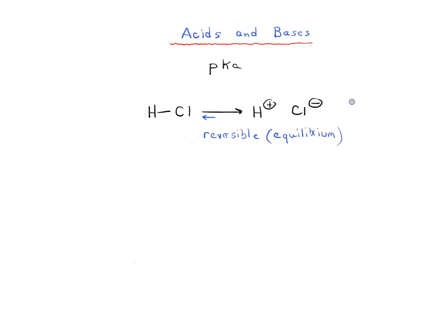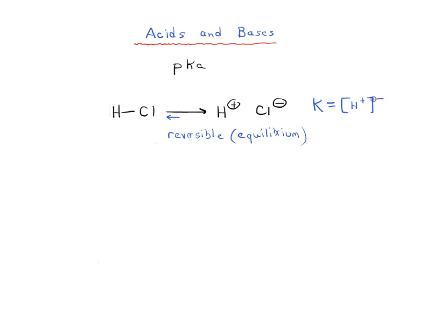And according to what we know about equilibrium constants, we can measure the equilibrium or write an expression for the equilibrium of a reaction. If we take the products, the concentrations of the products, H plus and Cl minus, the concentration of H plus, the concentration of Cl minus, and the concentration of HCl. And what we're going to do is we're going to call this very specifically Ka.